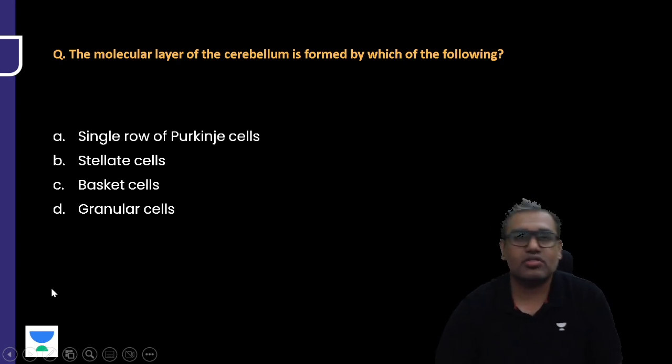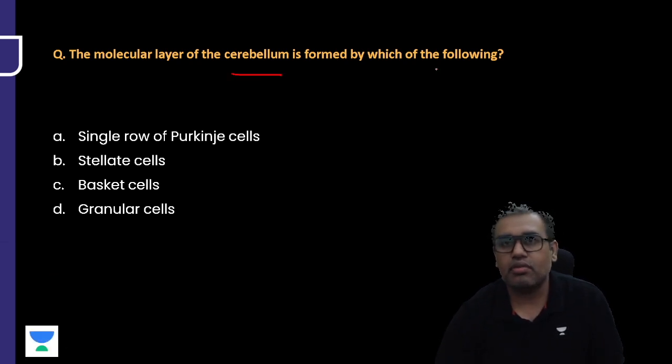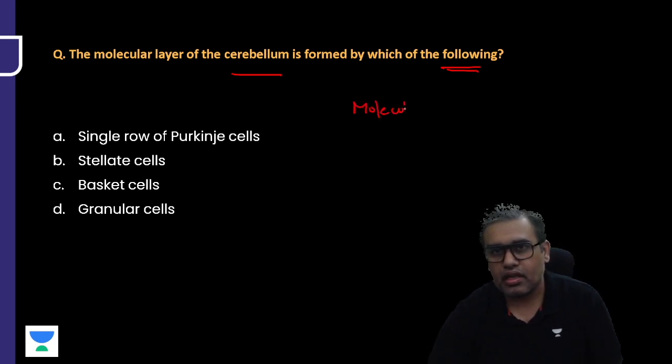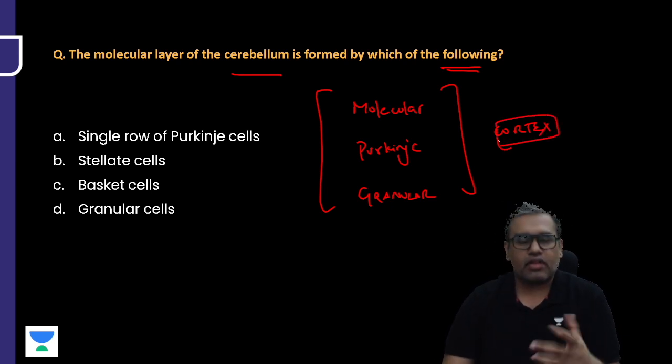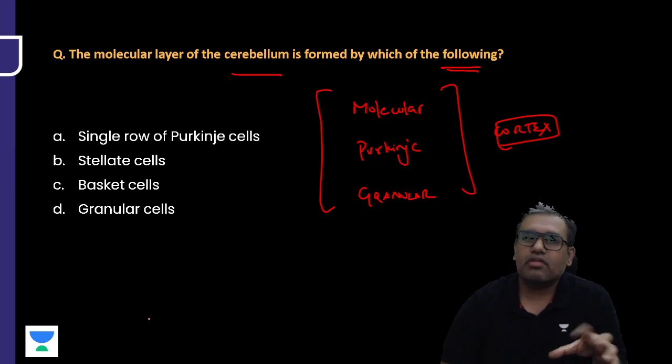Question: Cerebellum histology, very common. This time the question came around the molecular layer of the cerebellum, formed by which of the following? We all know by now there is a molecular layer, deep to it a single layer of Purkinje cells, and deep to it a granular layer. These are the three layers found in the cerebellar cortex.